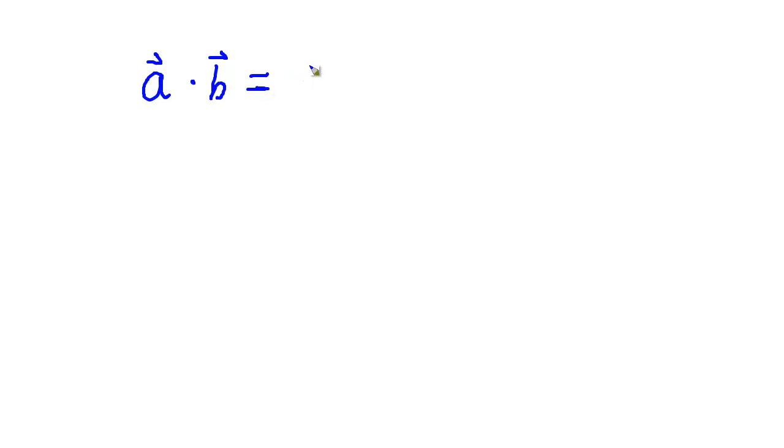that will give us the same as taking the magnitude of a, the length of a. That gives us one number, it's simply the length of a. And also the length of b, and then the cosine of the angle between the vectors.